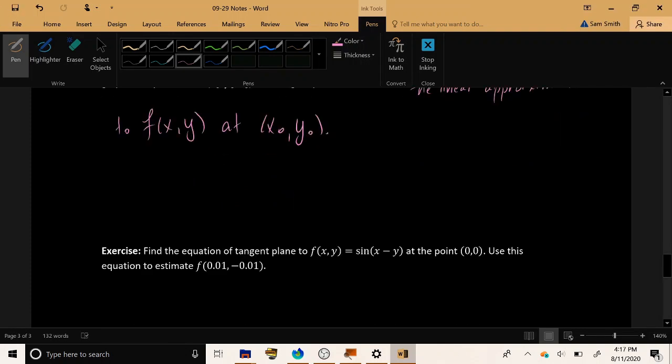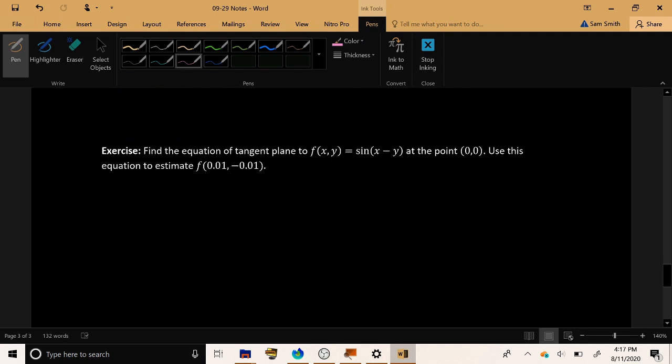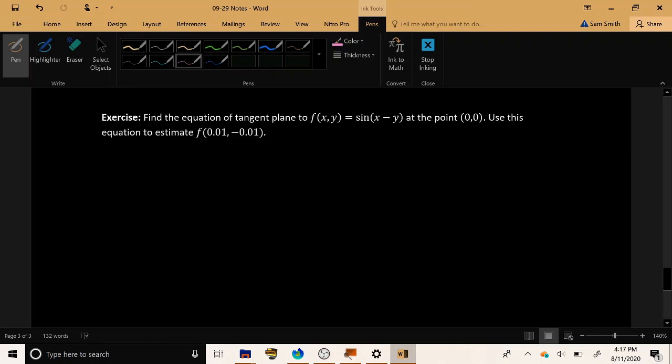So let's try it with the following equation. Find the equation of the tangent plane to f of xy equals sine of x minus y at the point 0, 0. Then use this as your linear approximation to estimate the value of f at 0.01, negative 0.01.